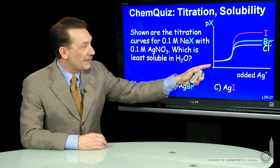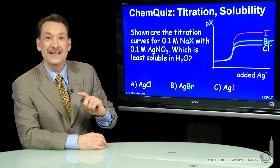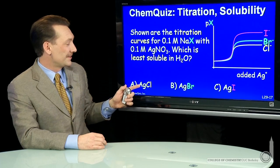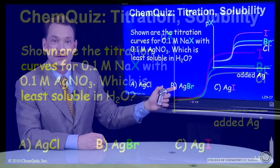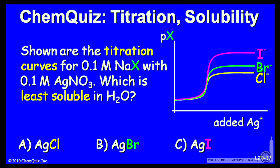The question I have is, from this curve, can you tell which is the least soluble salt? Is it silver chloride, silver bromide, or silver iodide? Think about that for a minute and make a selection.